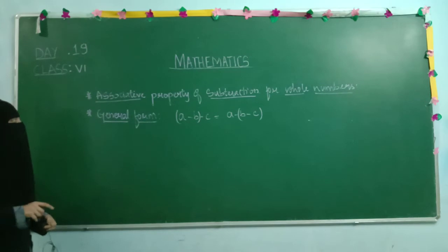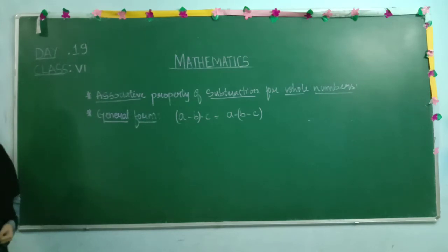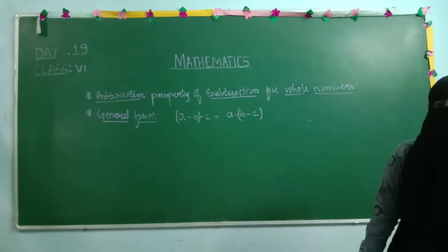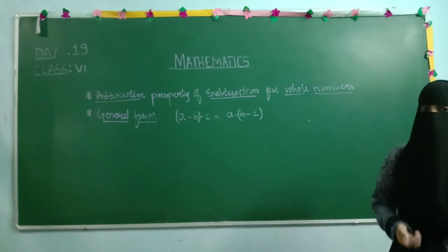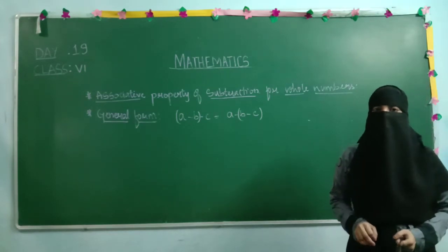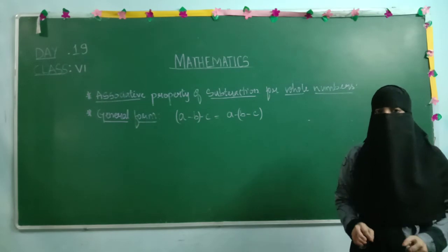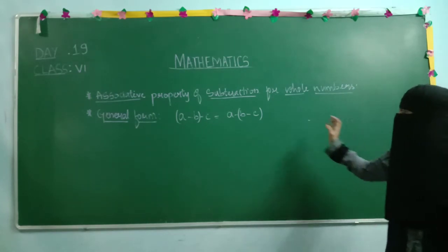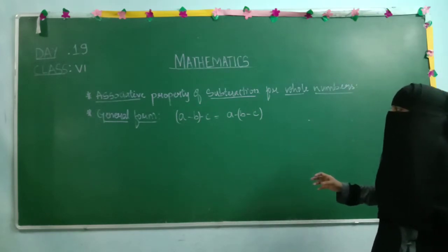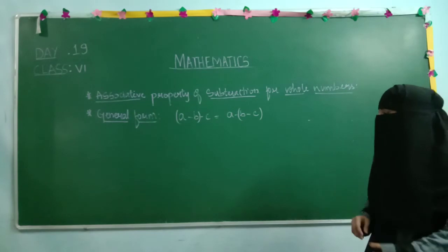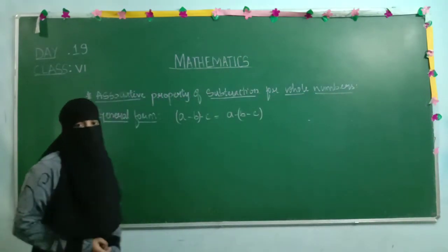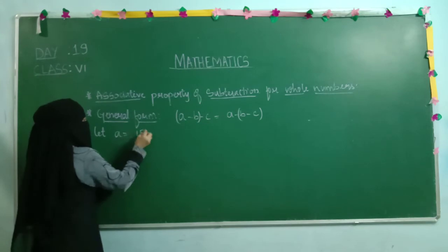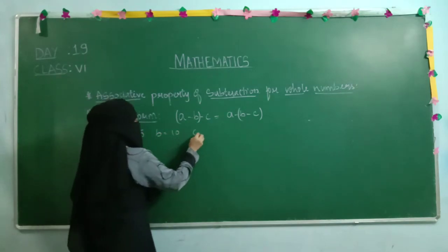Only these two types of questions you may get. When they ask you to take your own whole numbers, you need to choose your own values. Whole numbers start from zero, so you can choose any number from zero to infinity. So I will take A equals to 15, B equals to 10, C equals to 5.